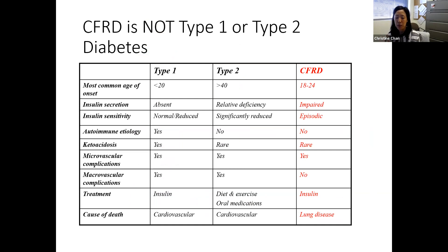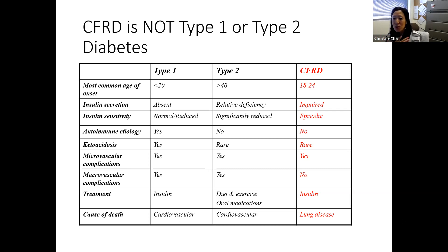It's important to understand that CF-related diabetes is different from type 1 or type 2 diabetes. Many folks, when they first hear about CF diabetes, have heard about or know somebody with type 1 or type 2. Most of the literature online about diabetes pertains to type 2, but may not be specific to CF. Type 1 diabetes is actually the most common type we see in pediatric endocrinology. It's autoimmune in nature — the immune system targets those insulin-producing beta cells in the pancreas and wipes them out, so that by the time someone presents with symptoms of type 1 diabetes, insulin secretion is almost nearly wiped out.